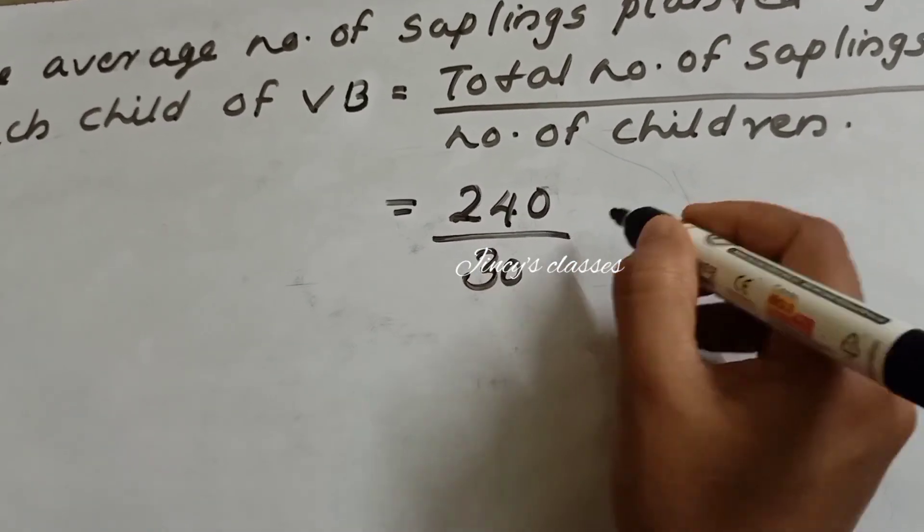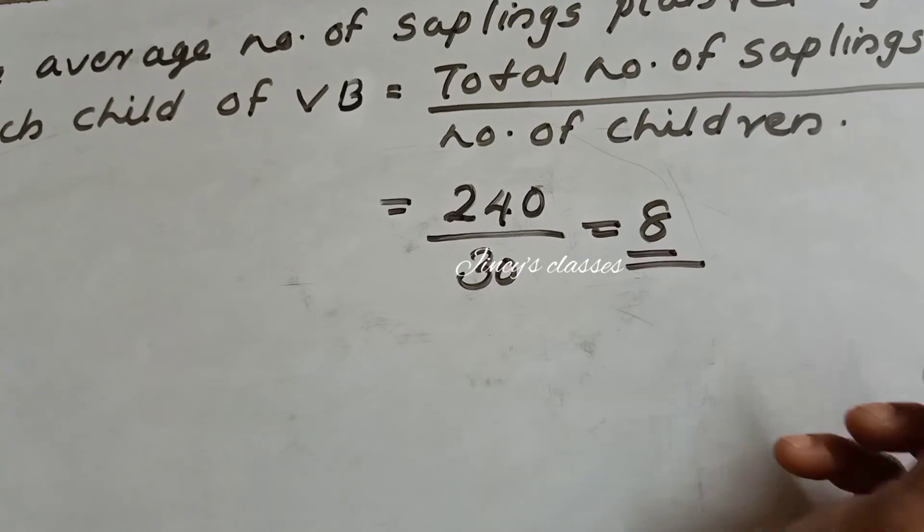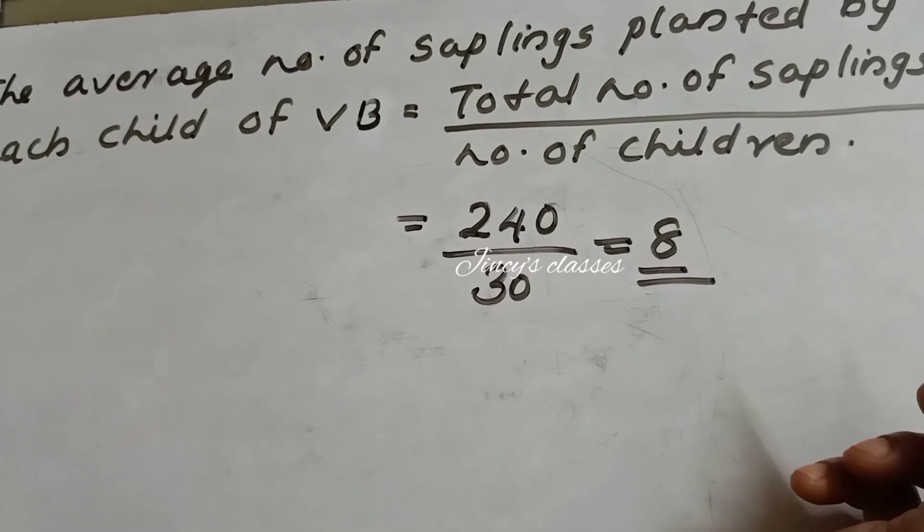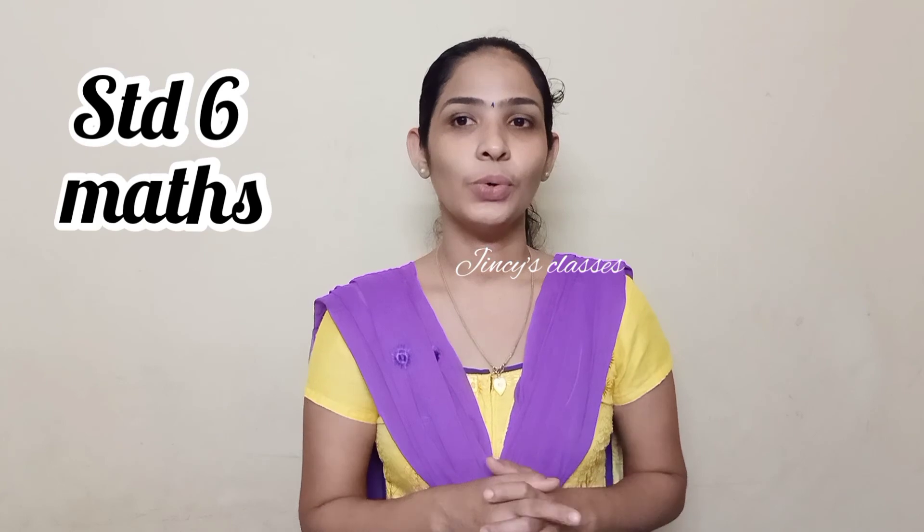Class 5B average = 8 saplings per child. Can you tell me which division is doing better? Yes, 5th B. On the basis of average number of saplings planted per child, 5th B division did a better job. Now go through page 23 in your textbook and do the activity and send it to me.